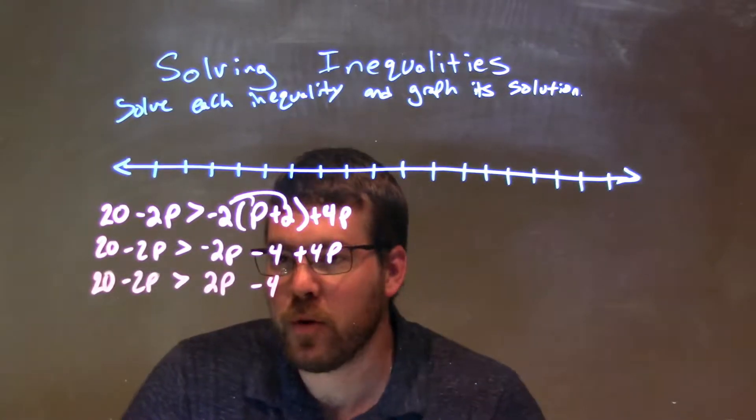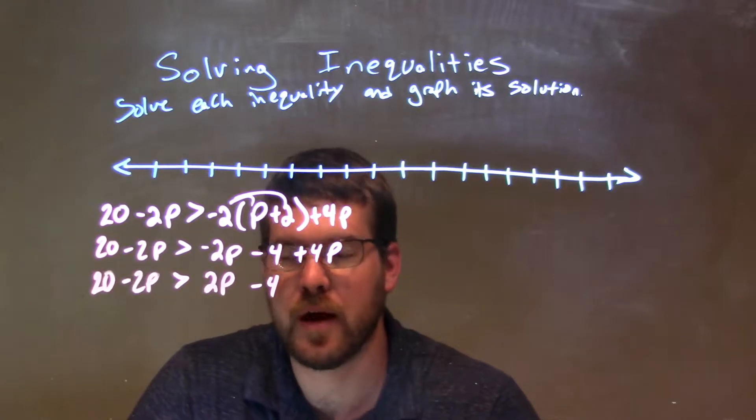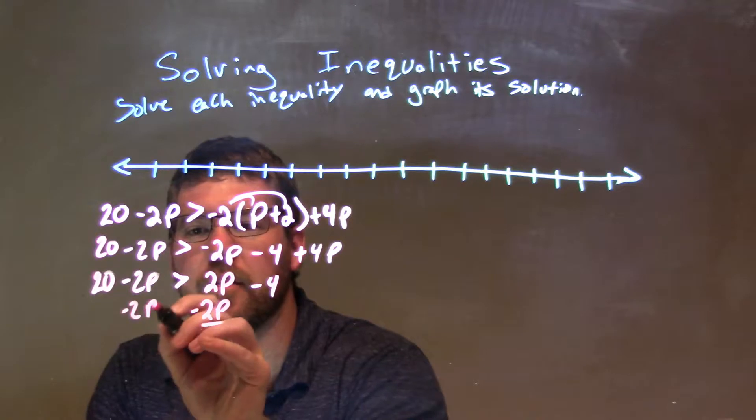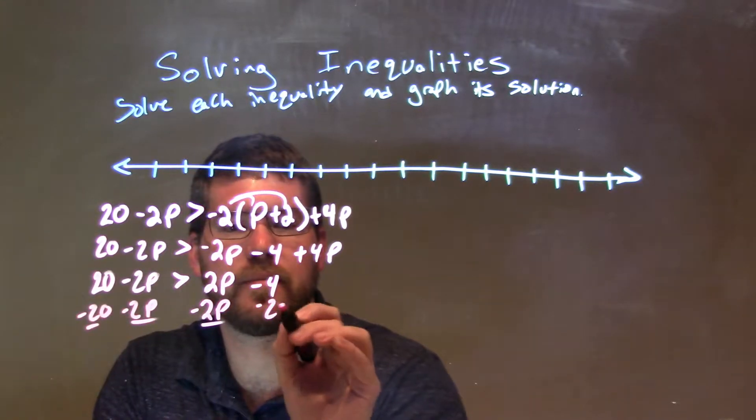Okay, so now what I want to do is I'm going to bring all my p's together and all of my numbers together. So, in this instance, I'm going to subtract 2p to both sides, and I'm going to subtract a 20 to both sides.